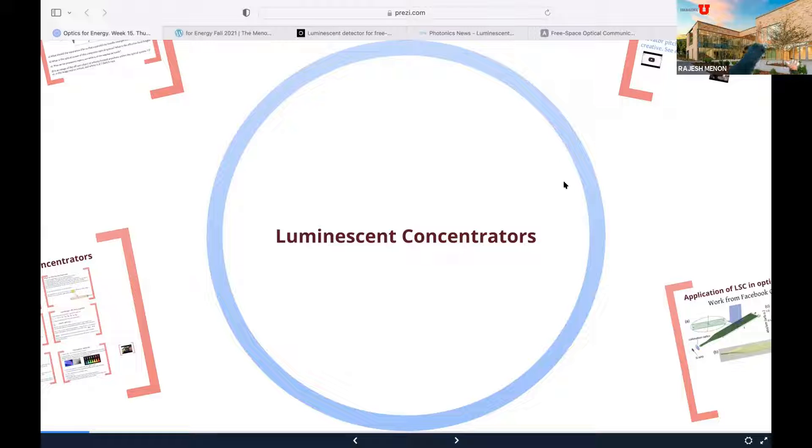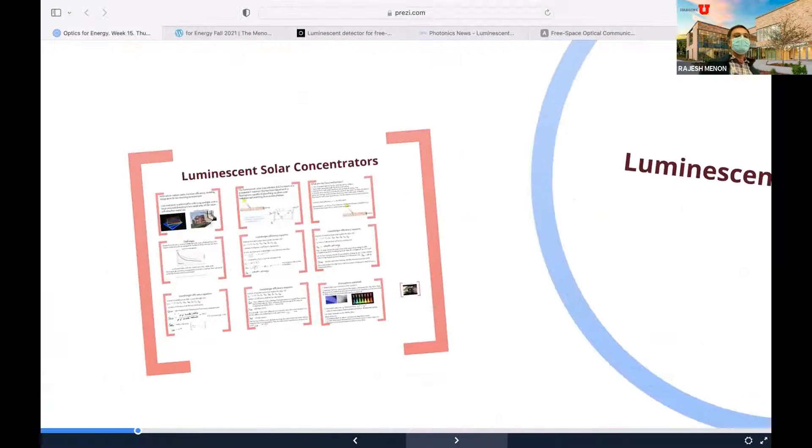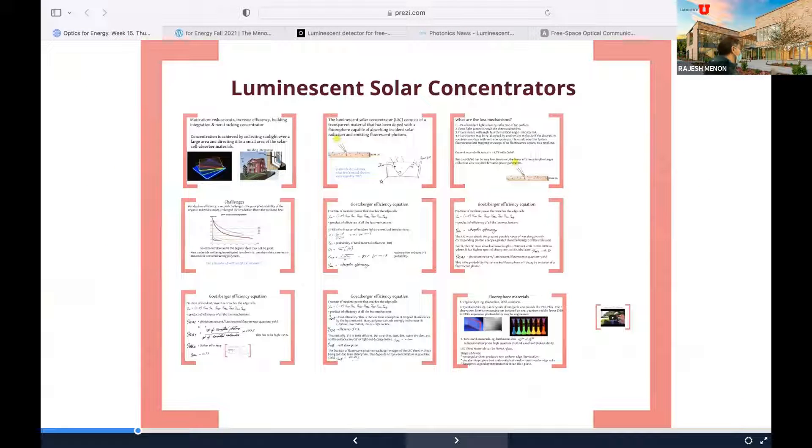Precisely, I need to track the sun very precisely. Otherwise, the image will shift and I won't be able to collect the light. Now, the luminescent concentrator is a very cool idea which avoids this problem. But of course, it has other problems.